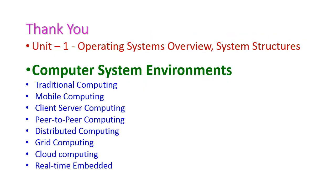To summarize, we have seen traditional computing, mobile computing, client-server computing, peer-to-peer computing, distributed computing, grid computing, cloud computing, and real-time computing. These are all examples of computer system environments from the first unit. In the next class, we will see another important topic from the first unit. Thank you.